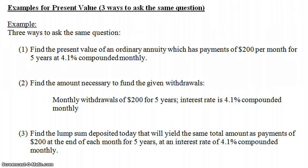A second way that you could ask the same question is find the amount necessary to fund the given withdrawals. Monthly withdrawals of $200 for five years, interest rate is 4.1% compounded monthly. Now, the way to think about this is how much money would you need to put into some account, like some bank account right now, so that at the end of each month for the next five years, you could withdraw $200.